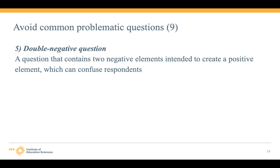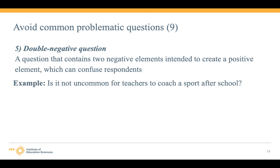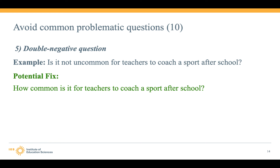Finally, we have the double negative question — a question that contains two negative elements intended to create a positive meaning, which really confuses respondents. For example: "Is it not uncommon for teachers to coach a sport after school?" That's just too hard for people to process. You want to reduce cognitive load as much as possible when people take the survey. So instead, say: "How common is it for teachers to coach a sport after school?" Just take out the double negative.